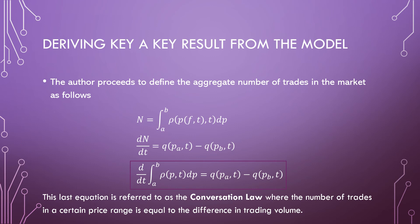So in terms of deriving a key result from the model, the author proceeds to define the aggregate number of trades in the market as follows, which is the integral of our trading density over a range B and A, where B is our upper price limit and A is our lower limit. And the derivative of this is just going to be the difference in trading volume. This last equation, which could also be our second equation here since they are really the same thing, is referred to as the conservation law, where the number of trades in a certain price range is equal to the difference in trading volume.